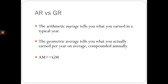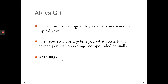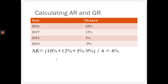If returns differ across years — as in this case with 2016, 2017, 2018, and 2019 all having different returns — then arithmetic and geometric return will never be equal. The arithmetic return is always greater than or equal to the geometric return. The only exception is when returns are identical across all years, say 10% each year, in which case both will equal 10%.